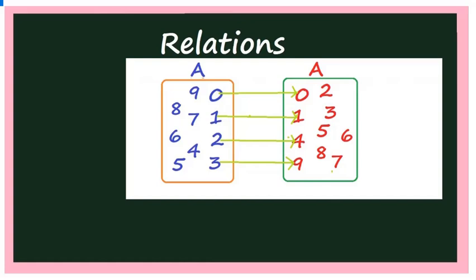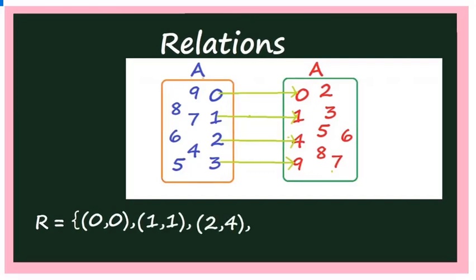You can write this relation as ordered pairs: R = {(0,0), (1,1), (2,4), (3,9)}. That's all — this is a relation. You can observe that there is a mapping for elements 0, 1, 2, and 3, while the rest of the elements cannot be mapped to any element of A. This is also an example of a relation.